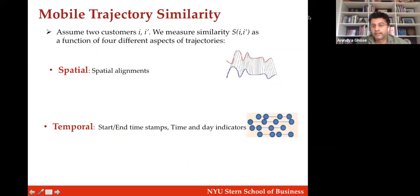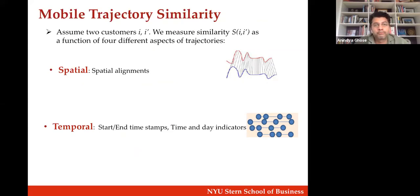The first dimension is spatial alignment. Can we distinguish between floors? Absolutely — if you look at the red and blue trajectories, two different people have very similar trajectories going from the first floor to the fifth floor, then to the third floor, then the seventh floor. Both the horizontal and vertical dimensions are important, so we categorize them as spatial. The second dimension is temporal: are they starting and ending at the same time? Is it the weekend or weekday?